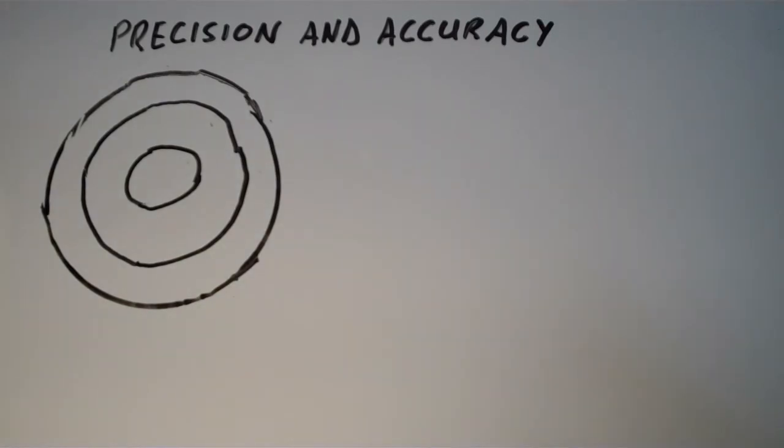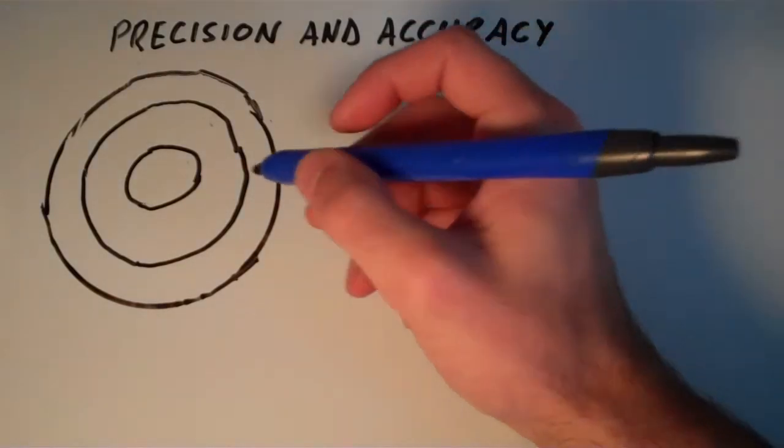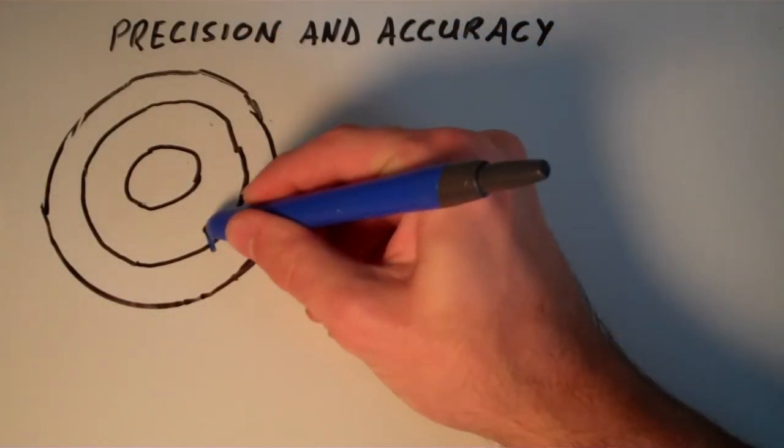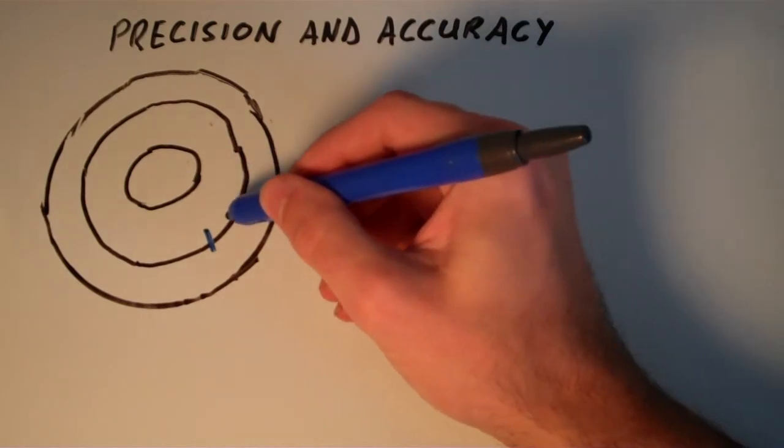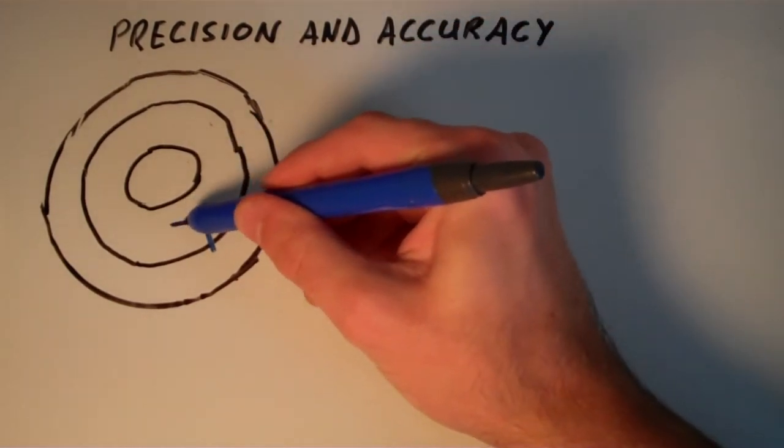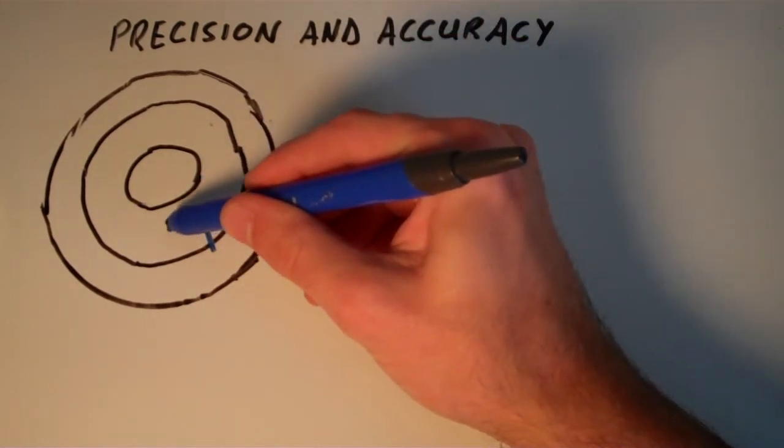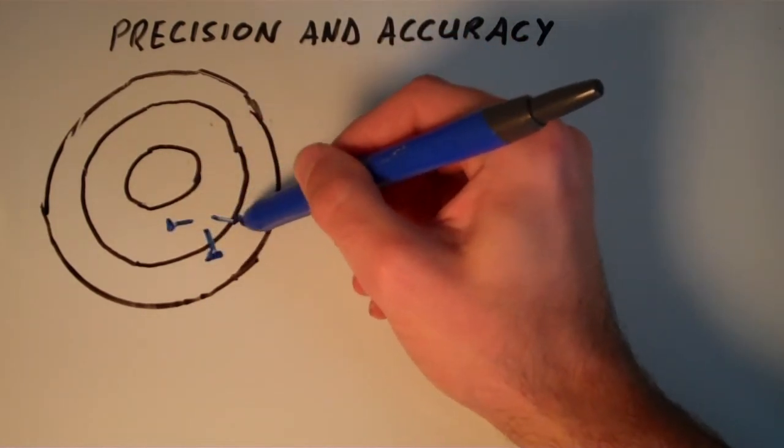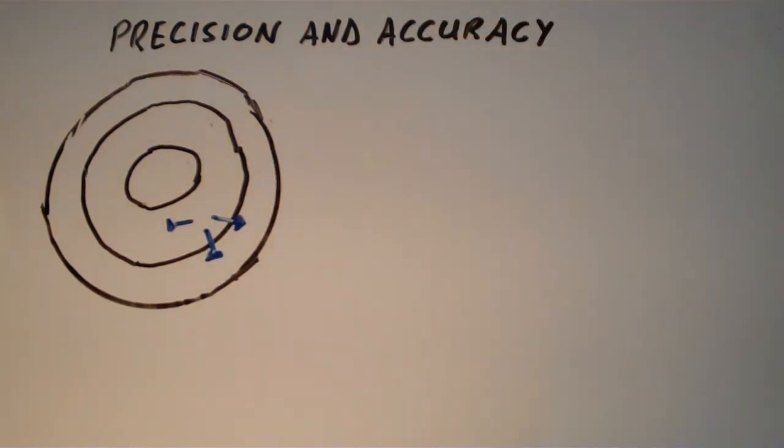So suppose I have a dartboard. Imagine this thing is like a dartboard or a target of some sort. And suppose I throw three darts at it. Suppose one of my darts lands here, one of my darts lands here, and the other one lands here. So these are my poorly drawn darts.